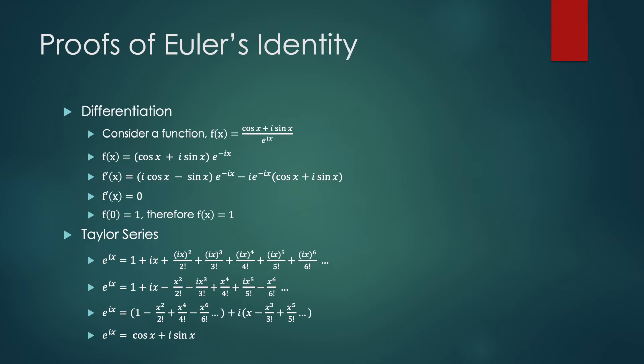But even after I learned these proofs, I would still always question in my head: how does an exponential function e to the IX trace a unit circle in the complex plane? I mean, it never really made sense to me, so I'm going to try and give some more intuition on why that happens next.